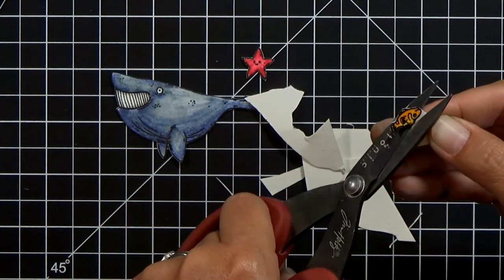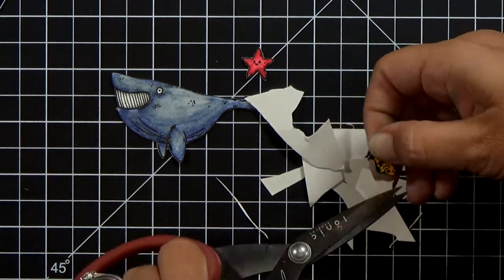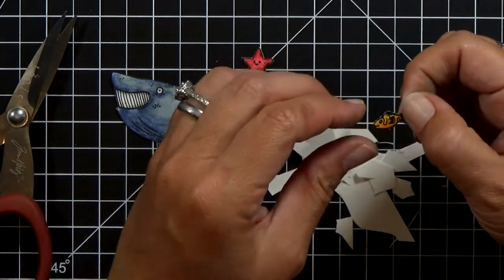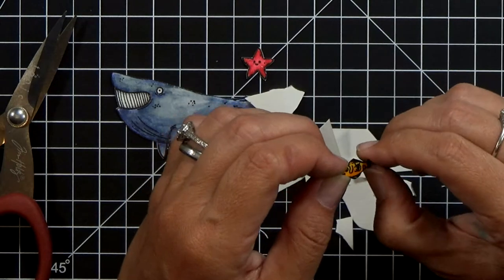Now this stamp set I believe there's a coordinating die set. I don't have it but I only have these three little images and they're super simple to cut out. I didn't even bother loading them into my scanning cut because it was super fast to cut out with scissors. So I fussy cut those and then we can work on the next part of the card.